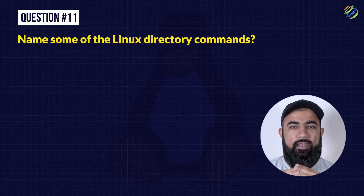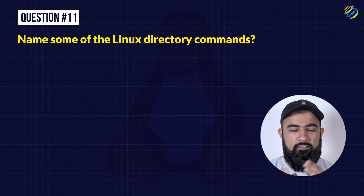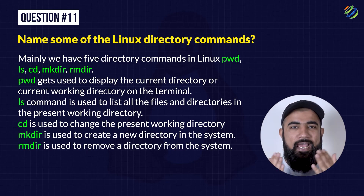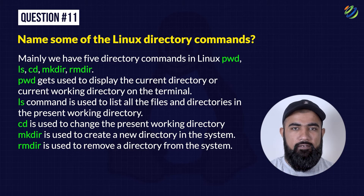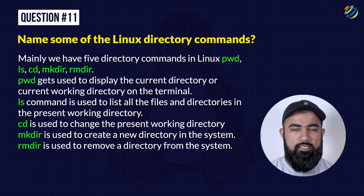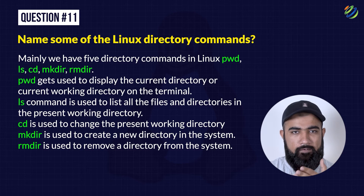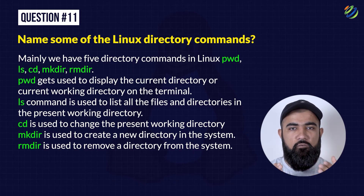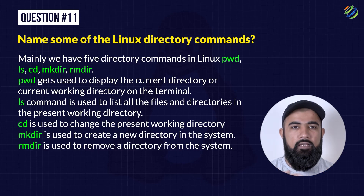Question 11: Name some of the Linux directory commands. Mainly we have five directory commands in Linux: PWD, LS, CD, MKDIR, and RMDIR. PWD is used to display the current working directory on the terminal. LS is used to list all the files and directories in your present working directory. CD is used to change your present working directory. MKDIR is used to create a new directory in the system. RMDIR is used to remove a directory from the system.